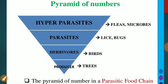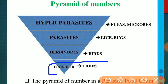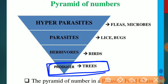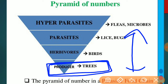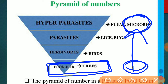Here is the picture showing the inverted pyramid: at the base we have trees in smaller numbers, increasing upward, with herbivores, birds, parasites, and then hyper-parasites at the top in greater amounts.